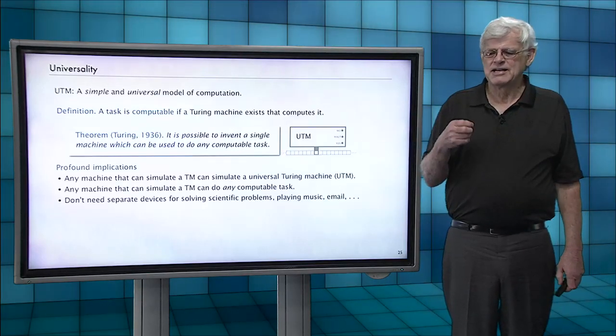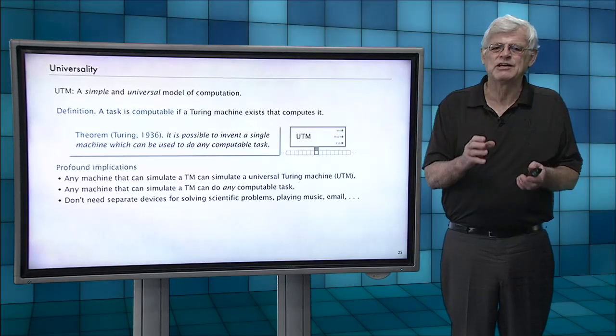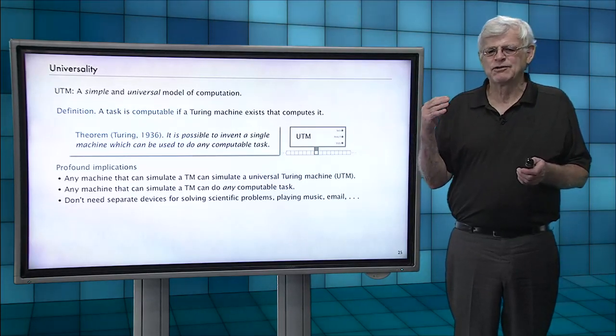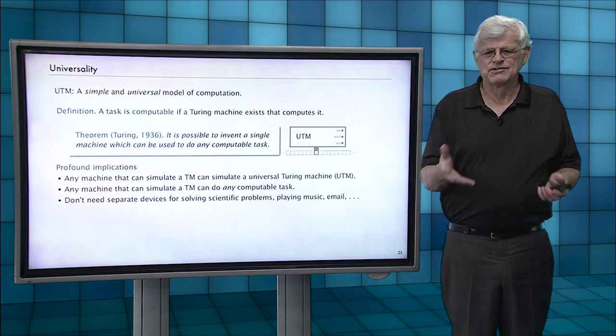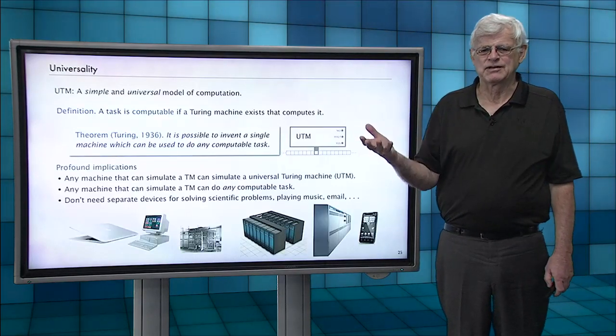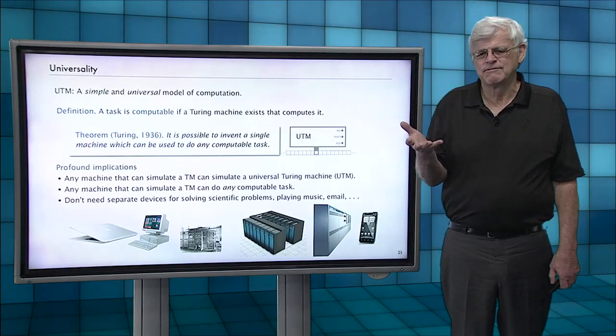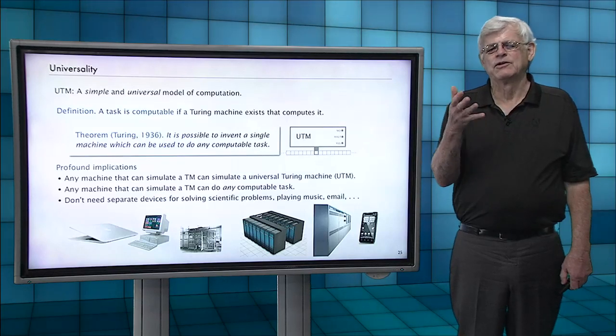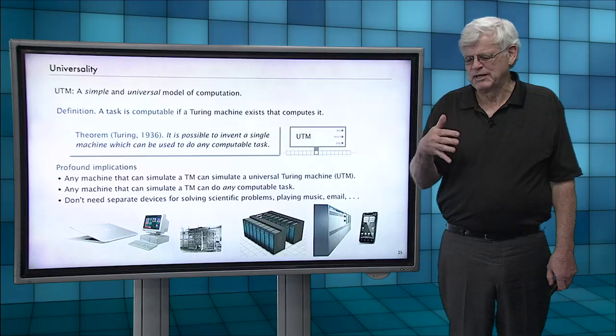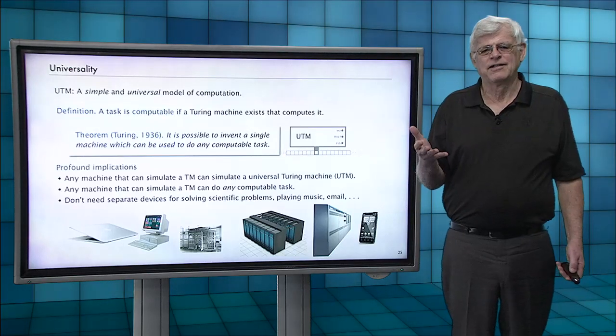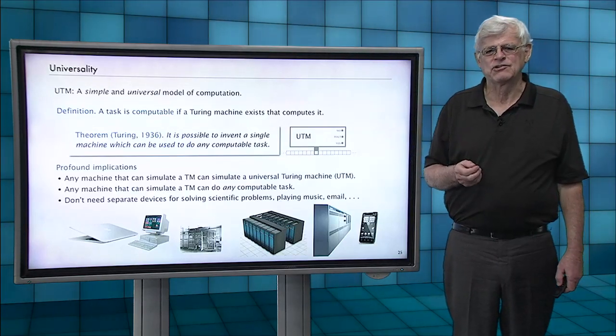And that means that in terms of what you can compute, any one machine is universal. We don't have to build separate computers for each task that we might encounter, like solving scientific problems or doing email or playing music. It means that all the computers that we can invent are equivalent. They're universal in that they can do anything that a Turing machine can do, which means they can do any computable task. And that's a very profound result that has lots of practical implications as well.